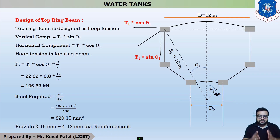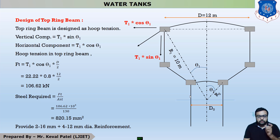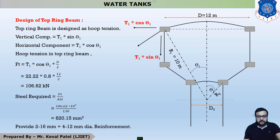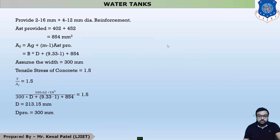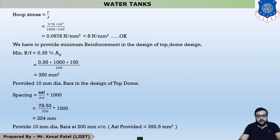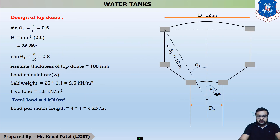Hello everyone. This is the third lecture of our example number one, which is the design of an Intze type water tank. In the last lecture we discussed the design of the top dome, and in the previous lecture we discussed how to fix the basic dimensions. However, there was a mistake while finding angle theta1 and theta2.